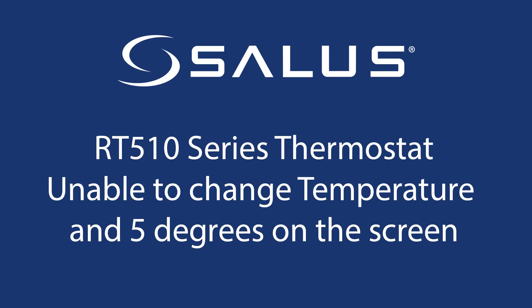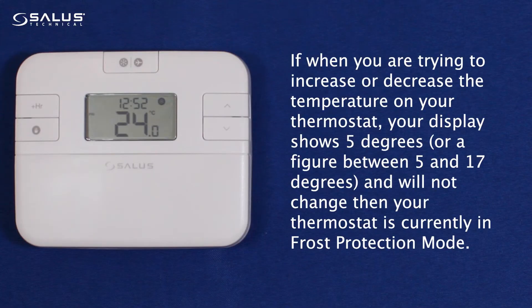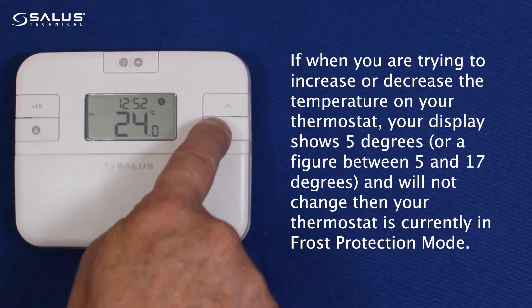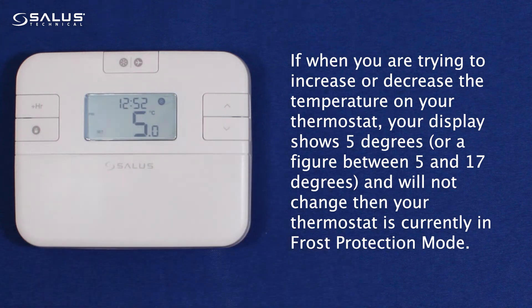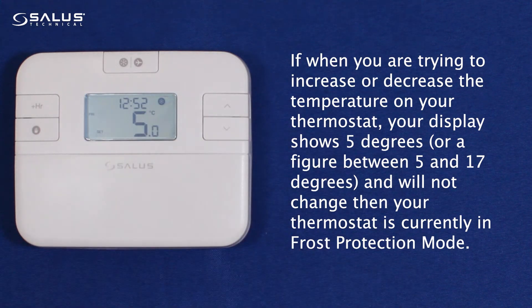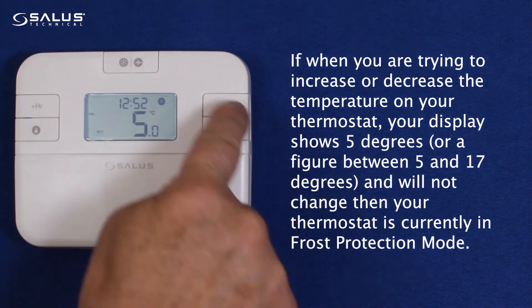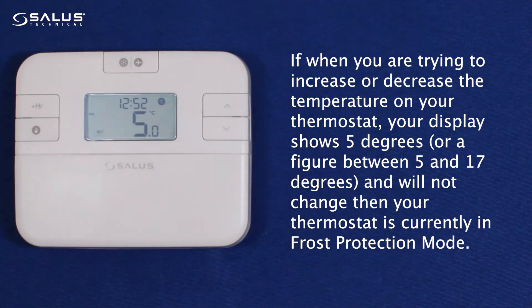RT510RF: unable to change temperature and 5C on the screen. If when you are trying to increase or decrease the temperature on your thermostat, your display shows 5 degrees, or a figure between 5 and 17 degrees, and will not change, then your thermostat is currently in frost protection mode.